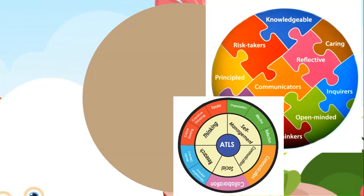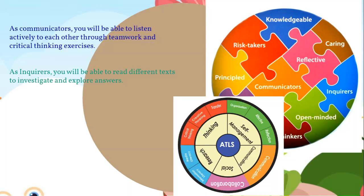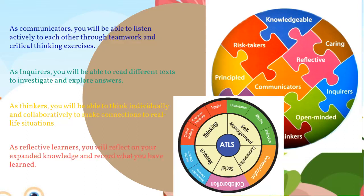As for the learners' profile attributes you will be gaining in this unit: first, you will become a communicator — you will be able to listen actively to each other through teamwork and critical thinking exercises. The second attribute is becoming an inquirer — you will read different texts to investigate and explore answers. You will also become thinkers, able to think individually and collaboratively to make connections to real-life situations. Finally, you will be reflective learners, reflecting on your expanded knowledge and recording what you have learned throughout the unit.